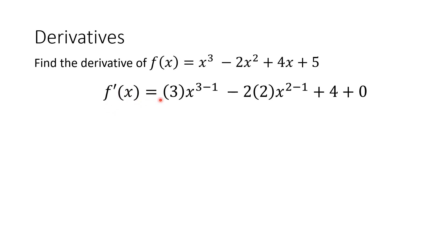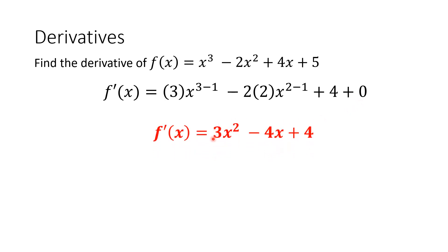So f prime of x will be: for the first term x cubed, the exponent becomes its coefficient and x is raised to 3 minus 1; minus, for 2x squared, the coefficient 2 is multiplied by its exponent 2 and x is raised to 2 minus 1; plus, for 4x, which is in the form ax with x raised to 1, the derivative is simply the coefficient 4; and plus, the derivative of the constant 5 is 0. Therefore f prime of x = 3x squared minus 4x plus 4.